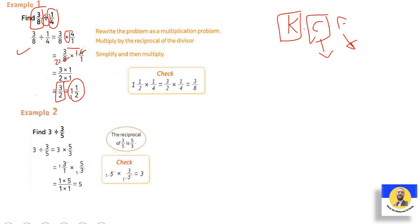Next: three divided by three-fifths. We use Keep, Change, Flip. Three becomes three-over-one. Three times five-thirds: the threes cancel to give one, so the answer is five-over-one, which equals five.